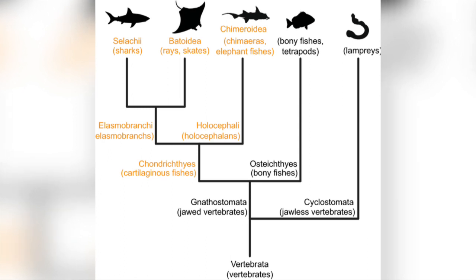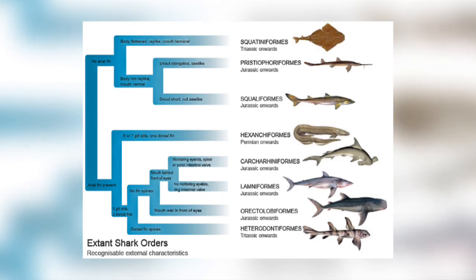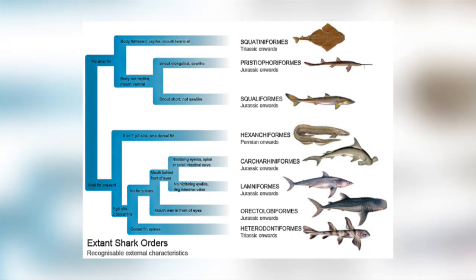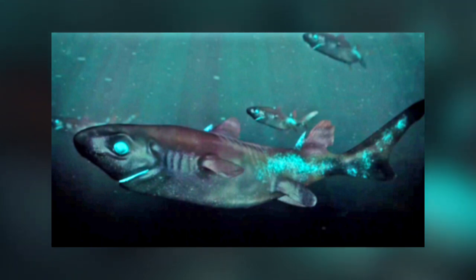Elasmobranchii are organised into two infraclasses. Rays and skates are members of Batoidea, and sharks belong to the infraclass Selachii. There are eight orders of shark. One of these orders includes the dogfish sharks, of which there are 131 species, making it one of the most diverse types of shark. Examples of sharks in this order are Greenland sharks and Ninja lantern sharks.